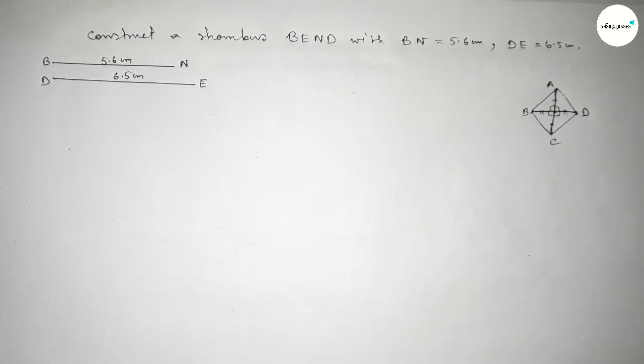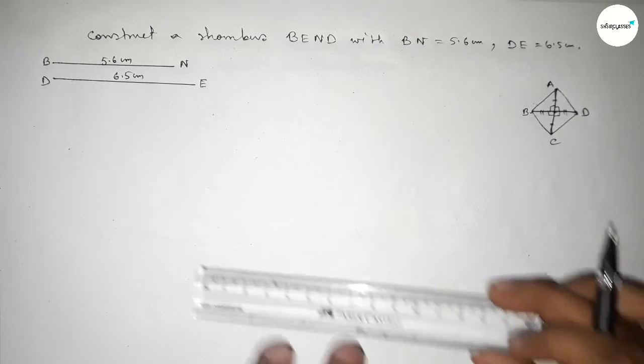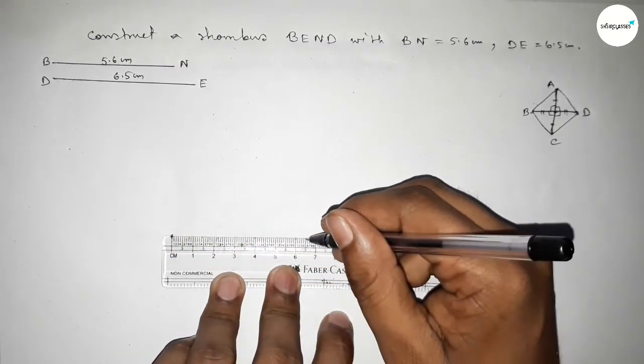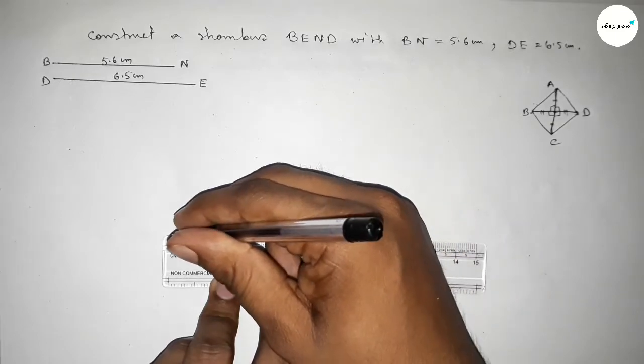Applying this concept here, first we have to draw the diagonal 6.5 centimeters. So this is 6.5 centimeters, this is DE.